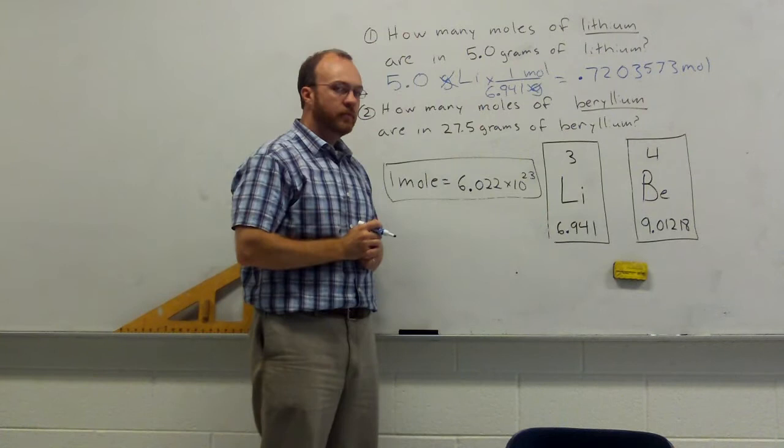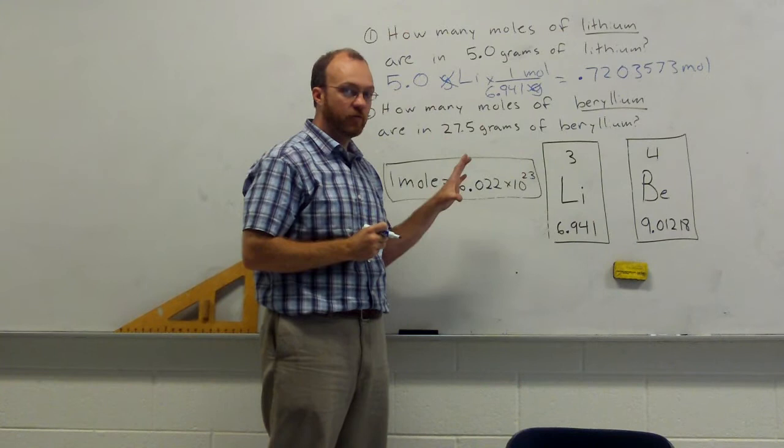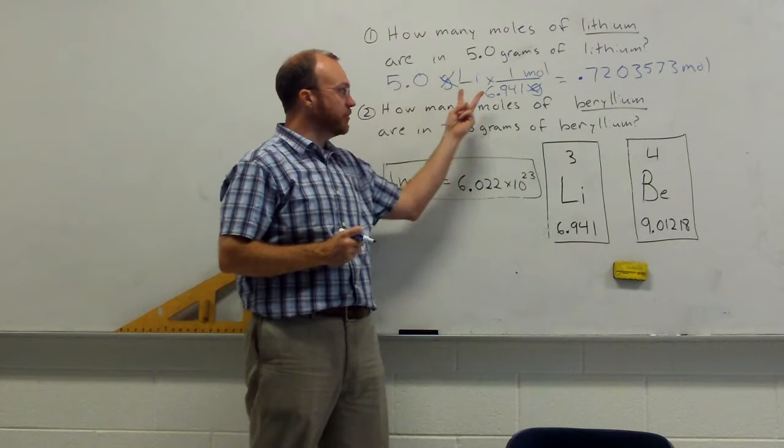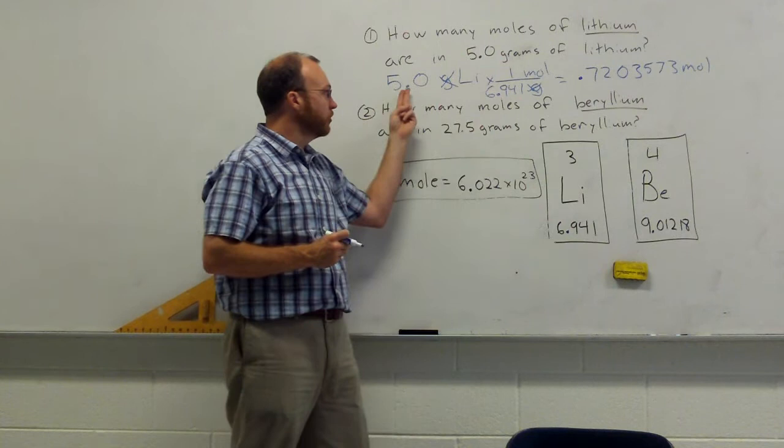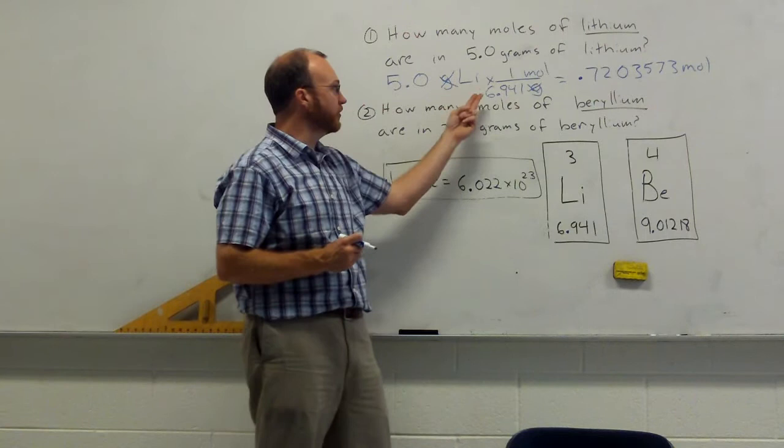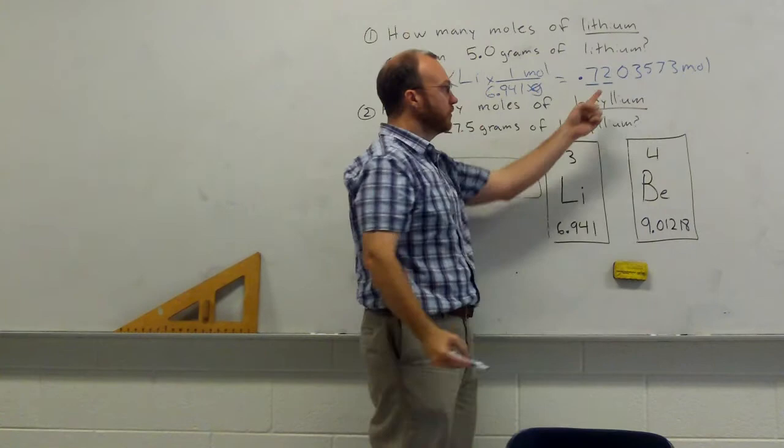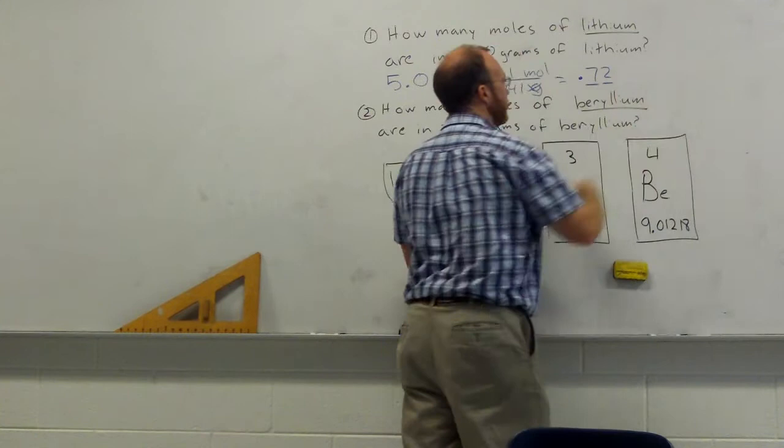Now, this is also where we get to review what we learned about significant figures. So, in our original measurement here, we had two significant figures. In the average atomic mass recorded on the periodic table, we had four significant figures. Two is less than four. So, by our rules for multiplying or dividing, we're going to round this off so that it has two significant figures. So, I would round off my answer here to the second significant figure. And I would say that we have 0.72 moles of lithium.